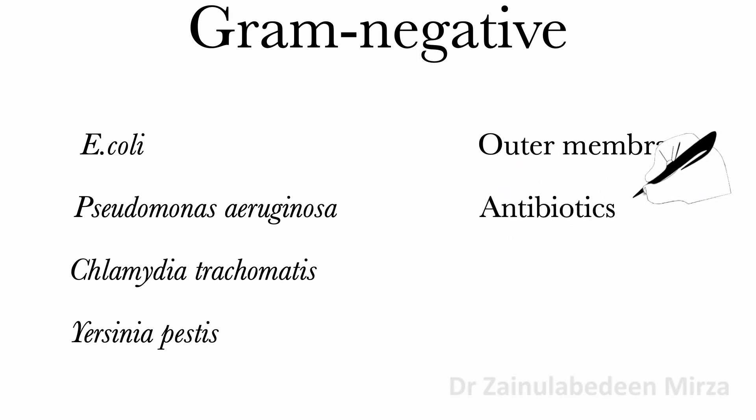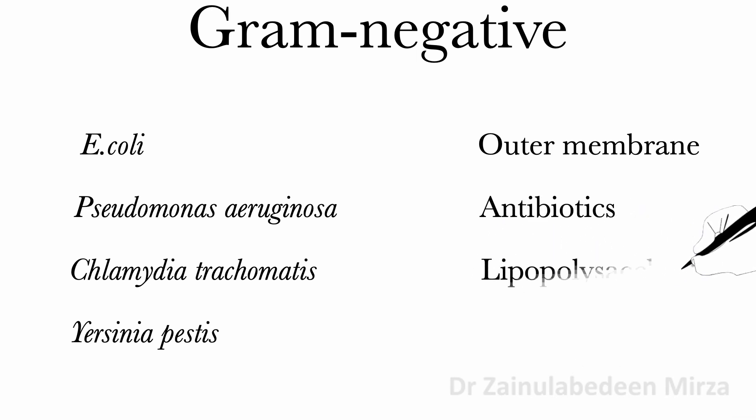Gram-positive bacteria are targeted by antibiotics such as penicillin. The outer membrane of gram-negative bacteria comprises lipopolysaccharides that consist of Lipid A. This Lipid A can cause a toxic reaction, an endotoxic reaction, when bacteria are lysed.